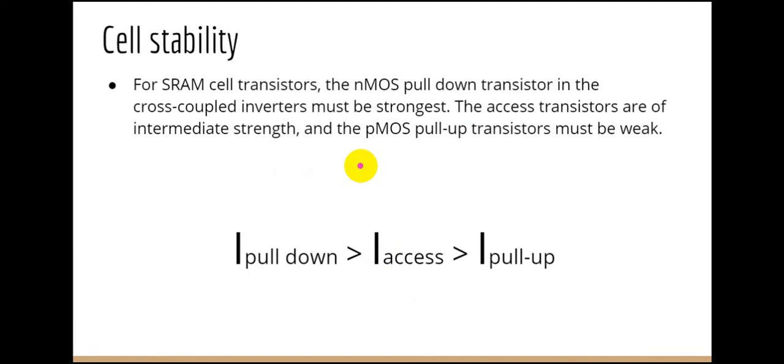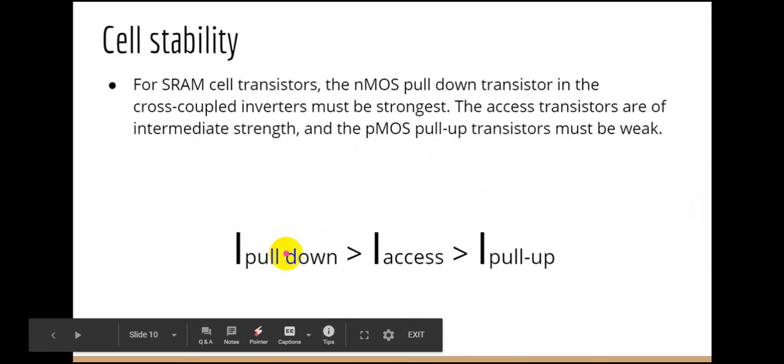We can say that for the SRAM cell transistor, the NMOS pulldown transistor in the cross-coupled inverters must be strongest, then the access transistor at intermediate strength, and the PMOS pullup transistors must be weak. So we can say that the I_pulldown greater than the I_access and the I_pullup.